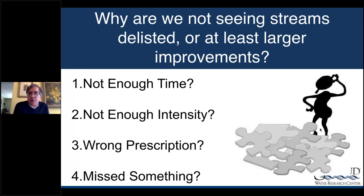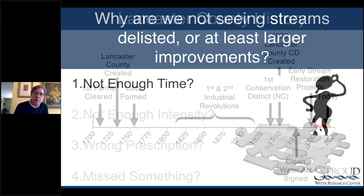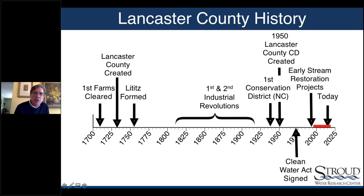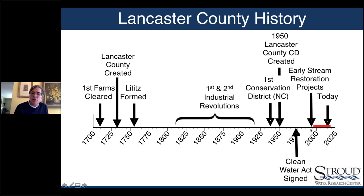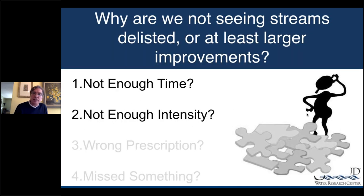Why aren't we seeing more listings or larger improvements in the last 20 years? My assessment points to four issues: we haven't had enough time; we haven't had enough intensity; we have done the wrong prescriptions; and we've missed things. On the first issue — not enough time — this is the timeline for Lancaster County, Pennsylvania, where deforestation occurred in the early 1700s, through farming and industrialization. The conservation district started in 1950, and early stream restoration started in the mid-90s. Relative to this timeline, the Clean Water Act has given us very little time to fix the problems we created.